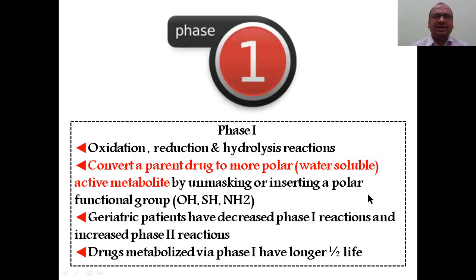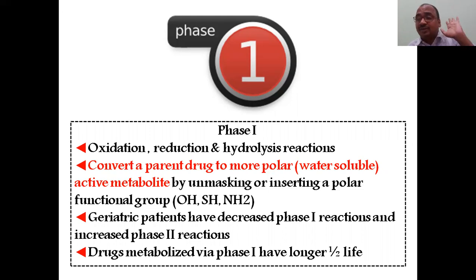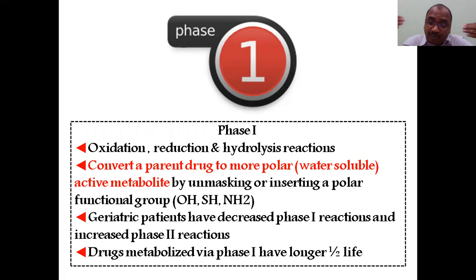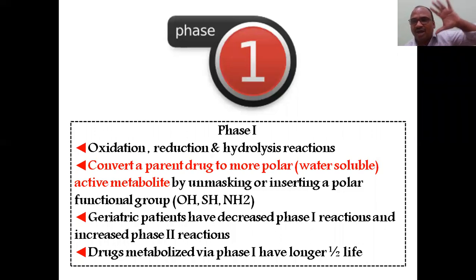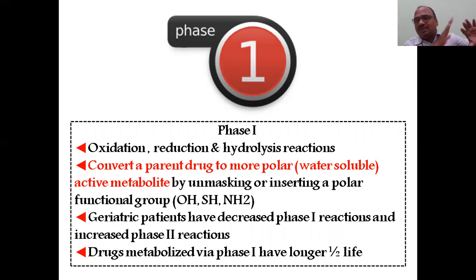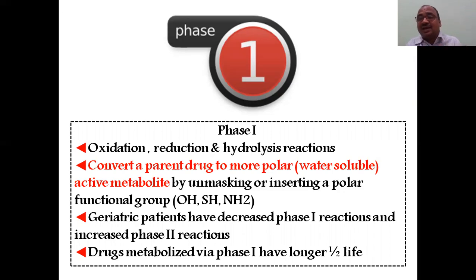Phase 1 reactions — oxidation, reduction, hydrolysis — convert the parent drug molecule into a more polar and active metabolite. The metabolite is active and becomes polar either by inserting a polar group or by unmasking a hidden polar group already present in the molecule. Phase 1 reactions expose or highlight the hydrophilic nature of the molecule.